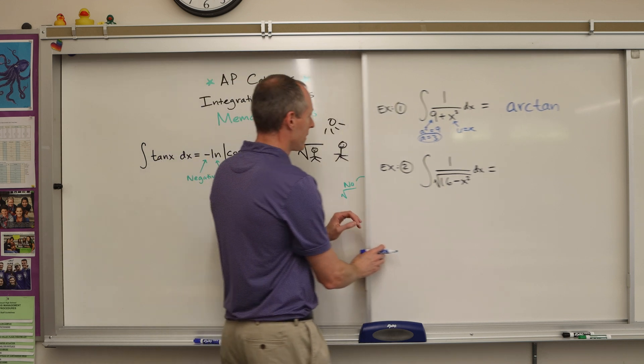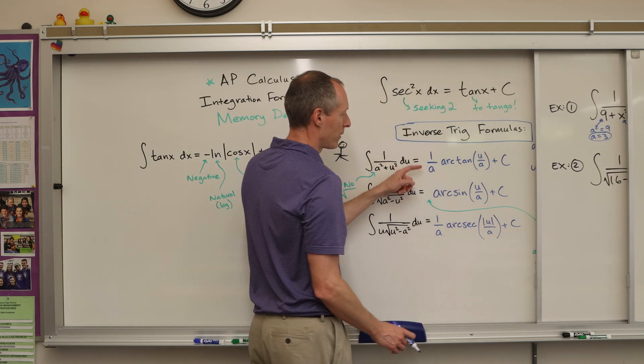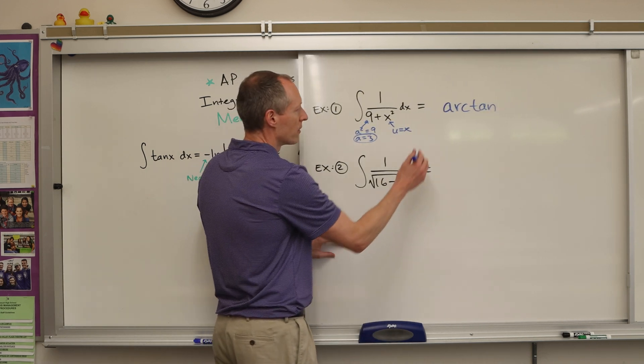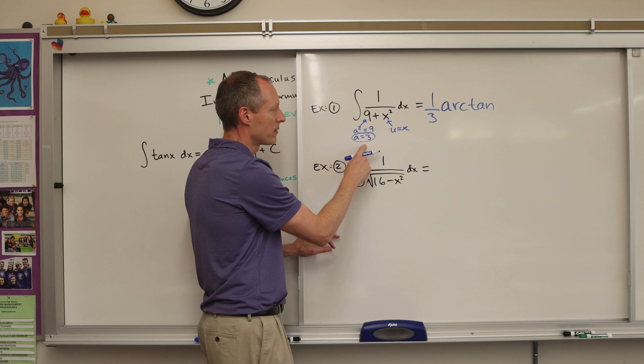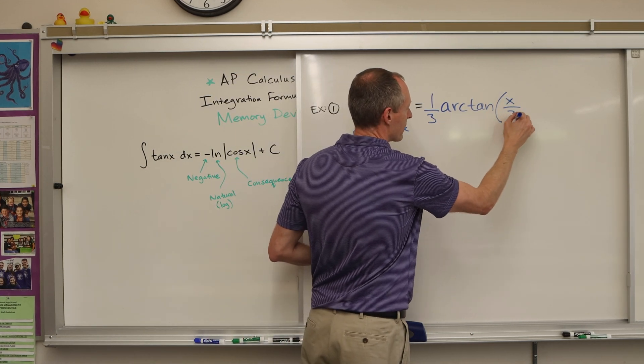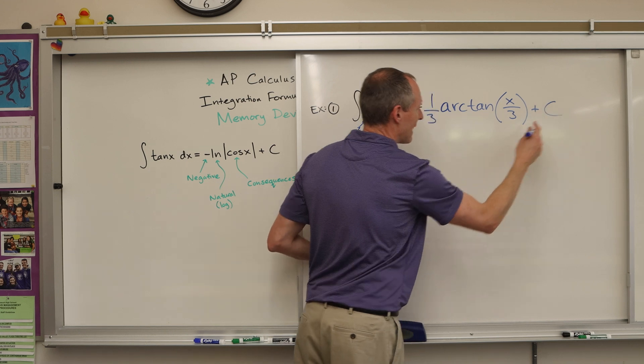So the formula, again, if I slide this back, it's 1 over a arc tan u over a. So it's 1 over a, and we found out a was 3. So 1 over 3 arc tan u, which happens to be x, over 3 plus c. And that's it.